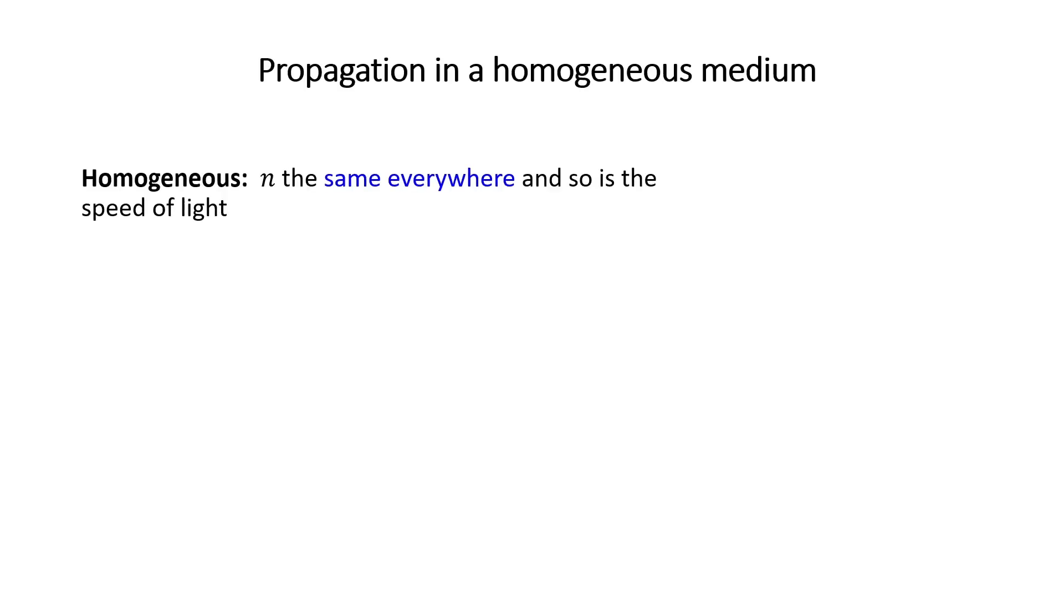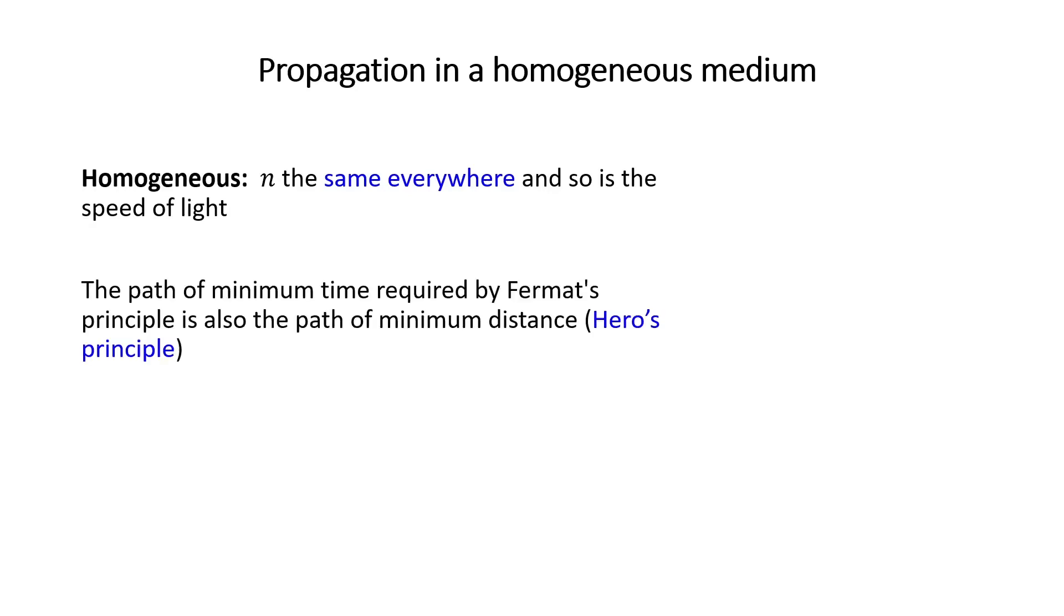If the medium is homogeneous, then the refractive index is the same everywhere, and so is the speed of light. The path of minimum time required by Fermat's principle is also the path of minimum distance. This is called Hero's principle, and we know that the path of minimum distance is a straight line.